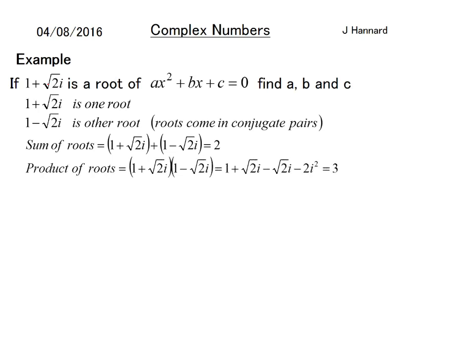The sum of the roots is 2. The product of the roots is (1 + √2i)(1 - √2i). Remembering that i² = -1, so -2 × -1 = +2, which gives 1 + 2 = 3.